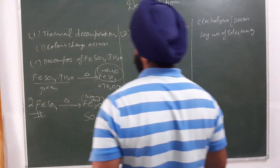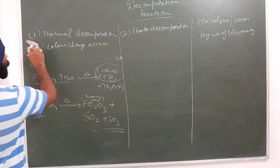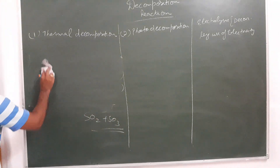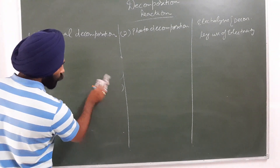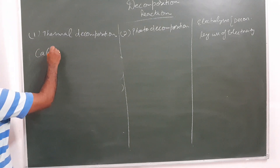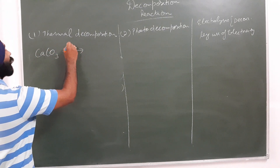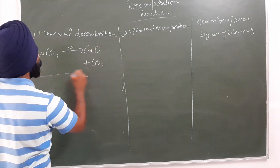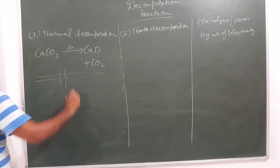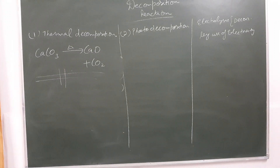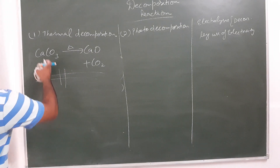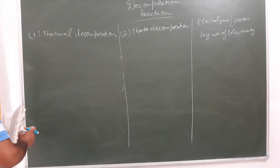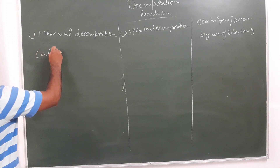Now we will discuss the thermal decomposition of calcium carbonate. Calcium carbonate when heated gives calcium oxide plus carbon dioxide — nothing else. CaCO3 → CaO + CO2.